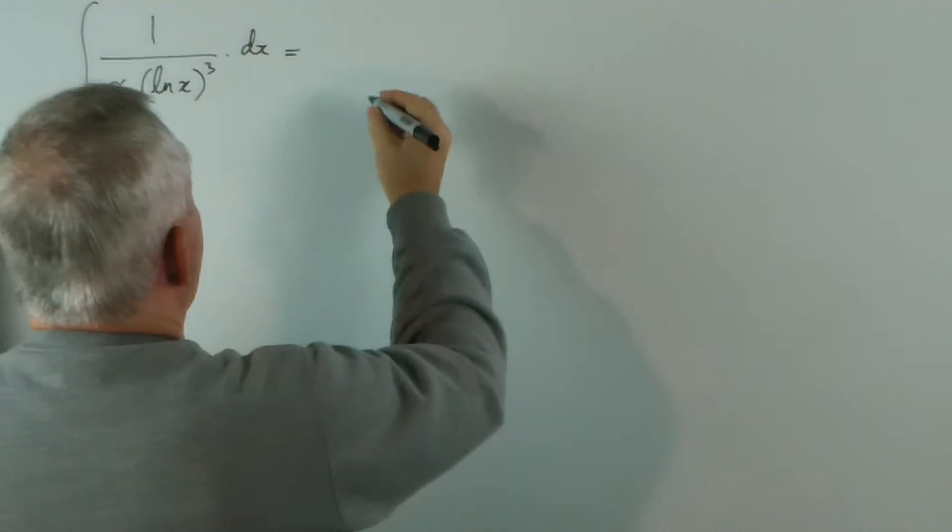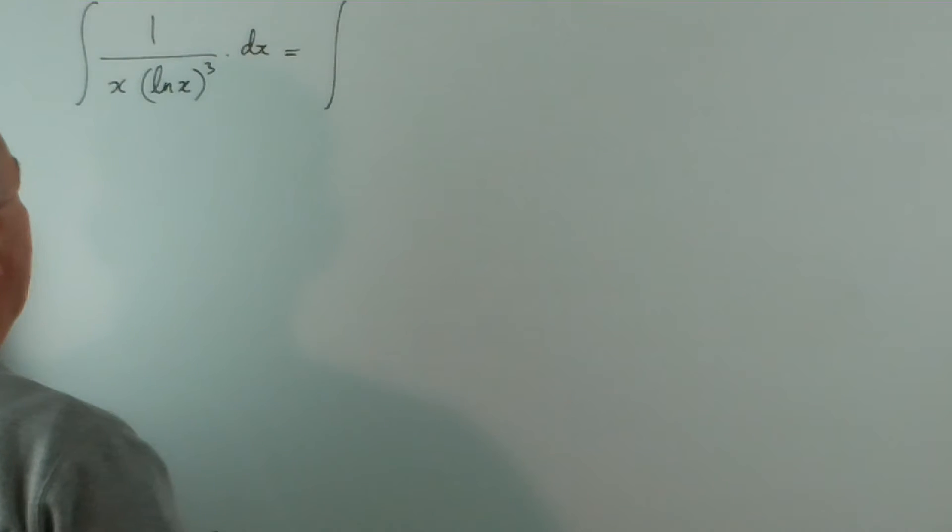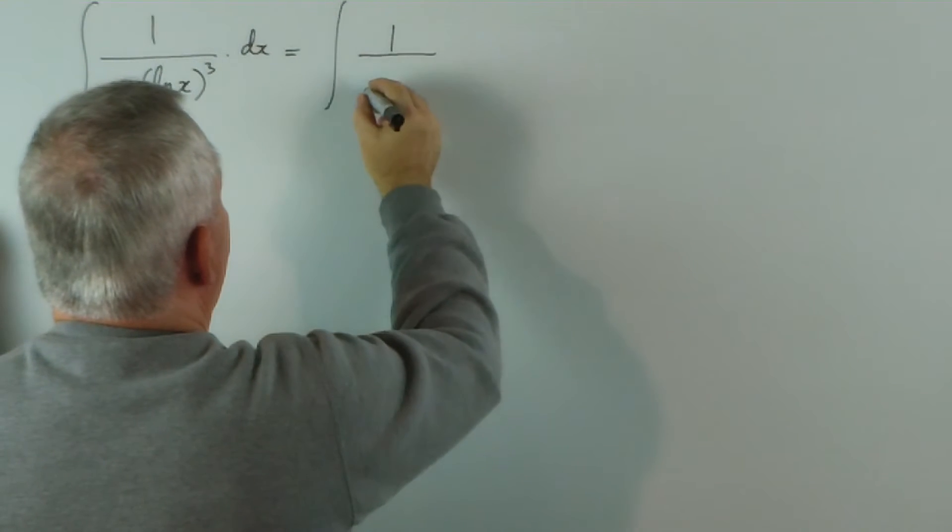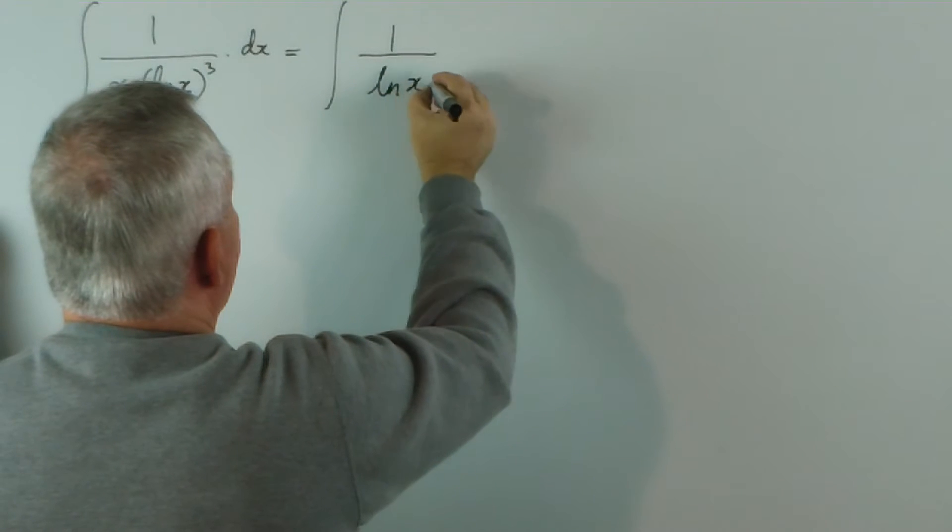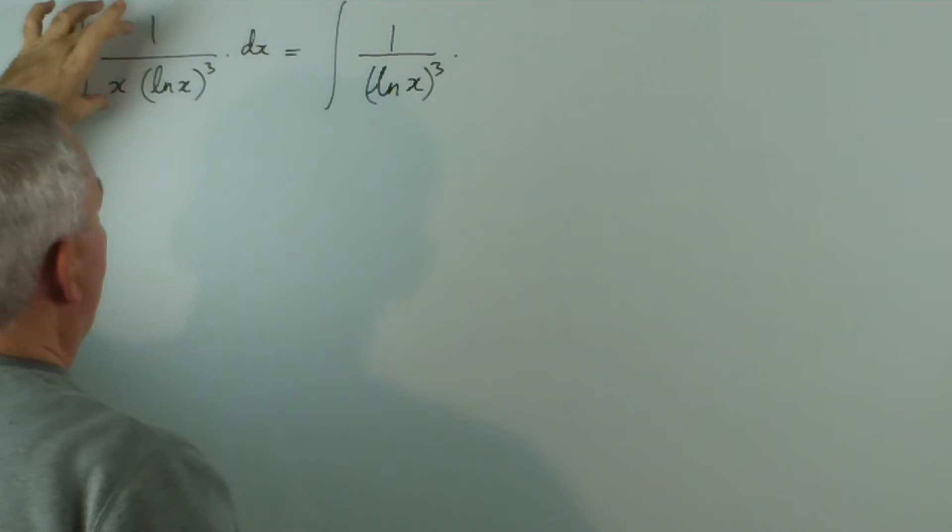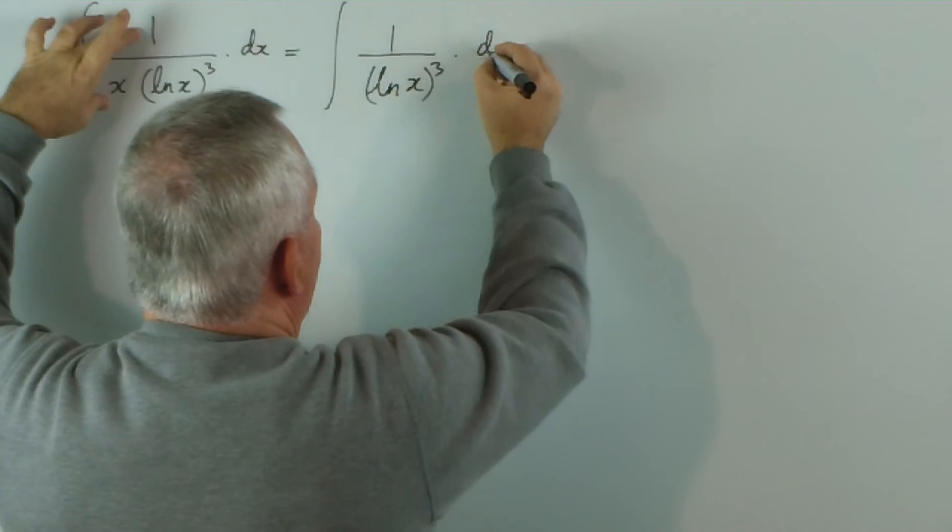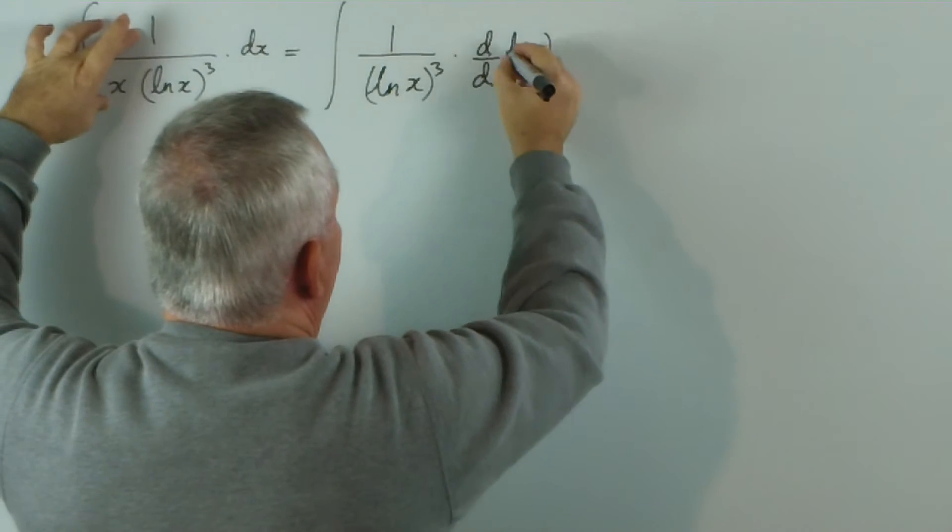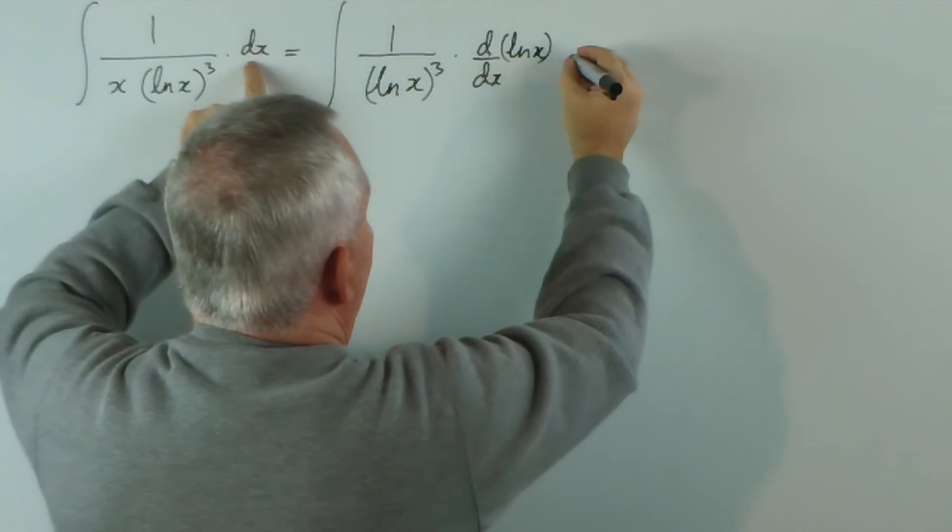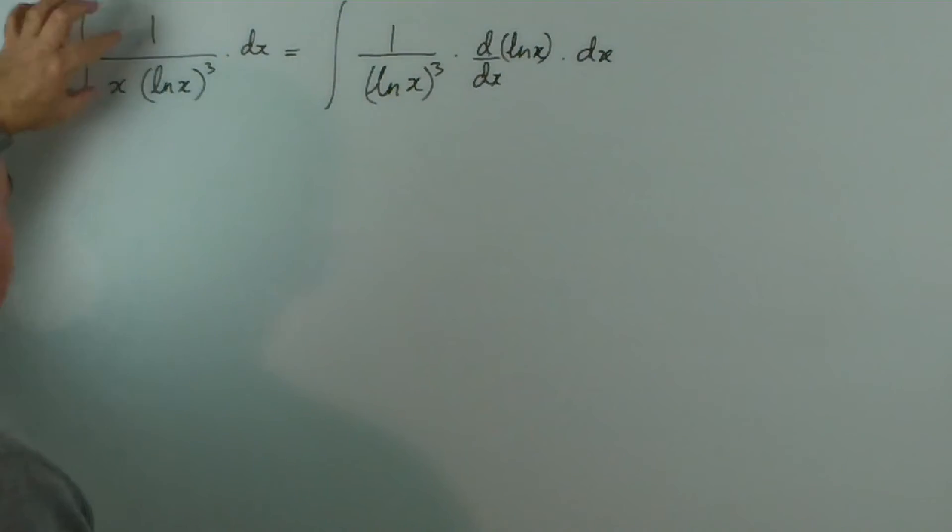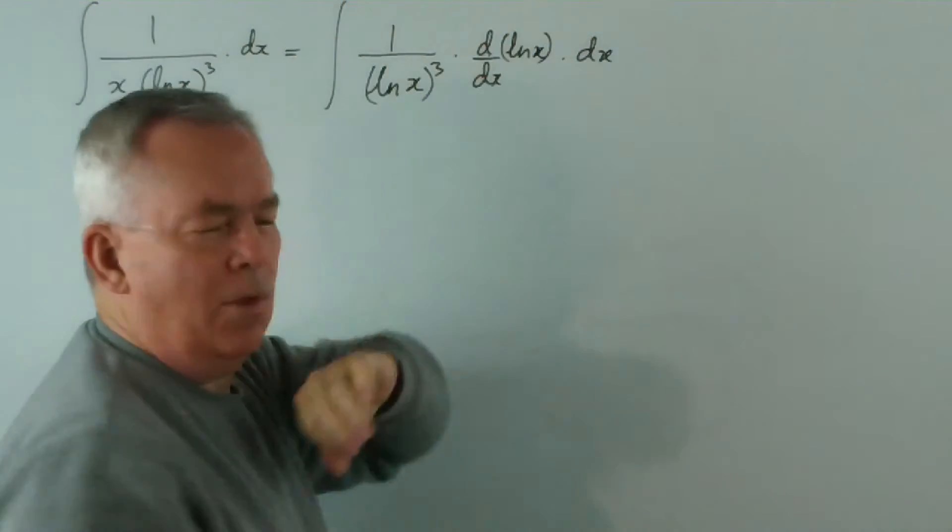But let me suggest this to you. I'll try and put in each step as we go. I'm going to write 1 over log of x cubed times... Now, instead of 1 over x, I'm going to write d by dx of log x times dx. So all I've done at this stage is I've replaced the 1 over x with the derivative of log x.